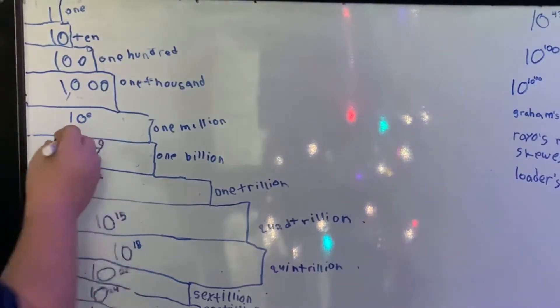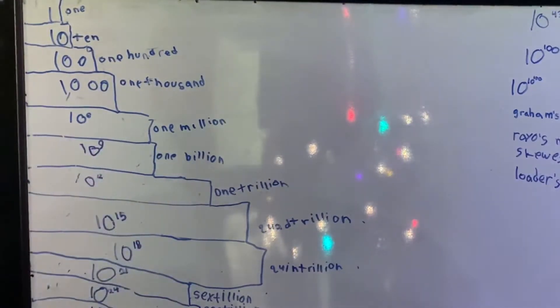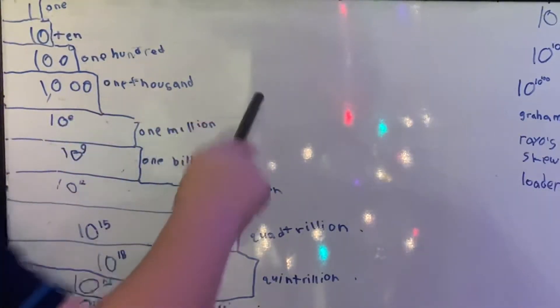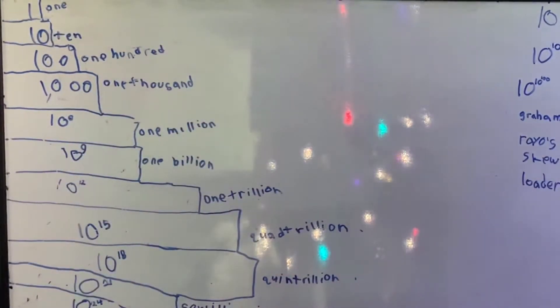So, you might get confused how it's like 10 to the power of 6. 10 to the power of 6 is 1 million. It's just an easy way of writing it.